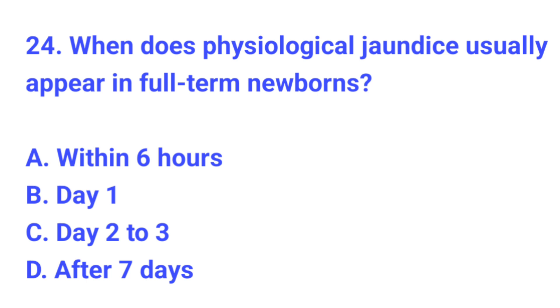Question number 24. When does physiological jaundice usually appear in full-term newborns? The correct answer is C, day two to three.